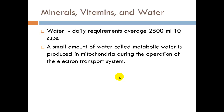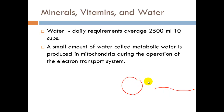Water. Daily requirements average 2,500 milliliters, or 10 cups. A small amount of water, called metabolic water, is produced in the mitochondria during the operation of the electron transport system. Reviewing the first part of this video series, we see that as substrates are run through the TCA cycle or Krebs cycle, we actually produce water — and in the electron transfer chain as well. Water and CO2 are major byproducts of that process.